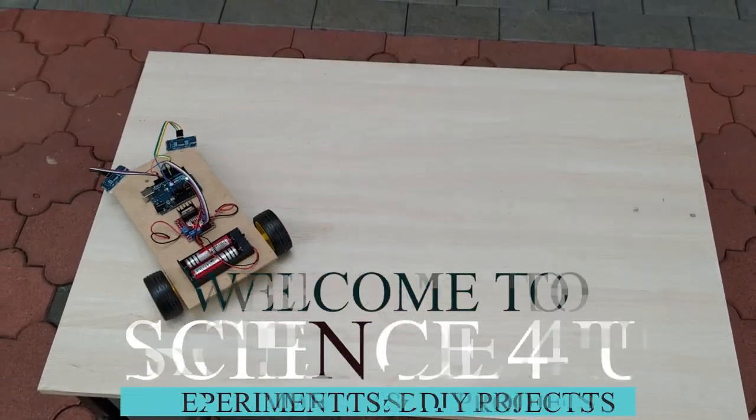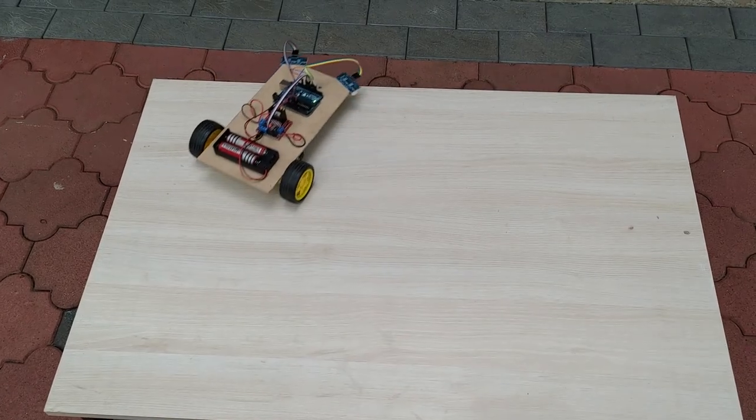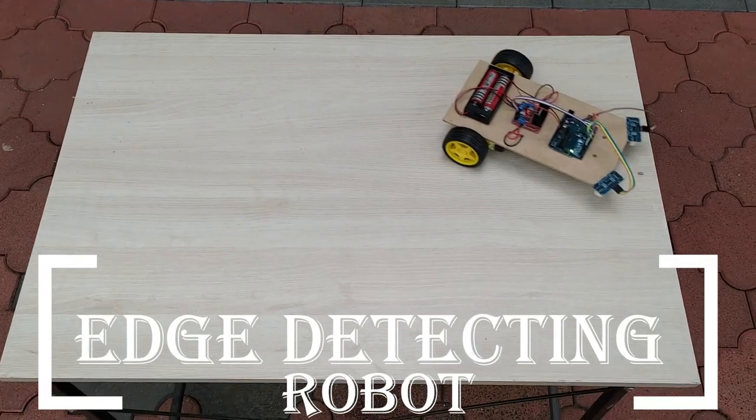Hello friends, welcome to another episode of Science For You. Today, we are going to learn how to make a robot that detects edges and prevents itself from falling off the table.